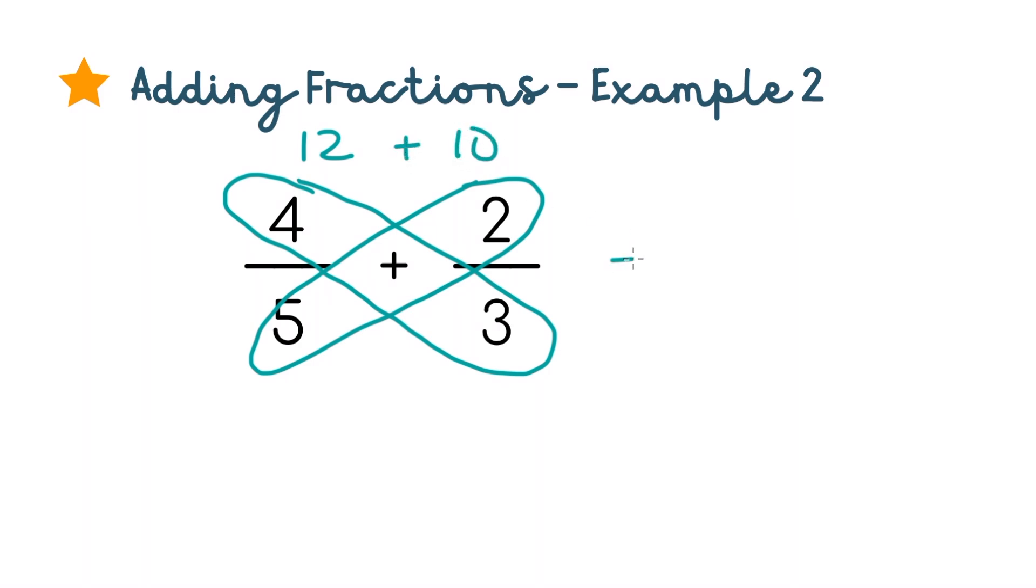Add them up, 12 plus 10 equals 22, and we'll put that in the numerator. Then multiply the denominators, 5 times 3 is 15.